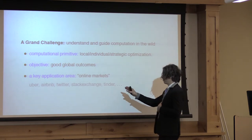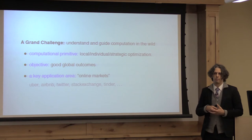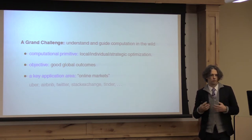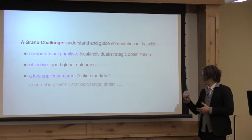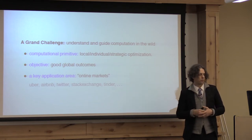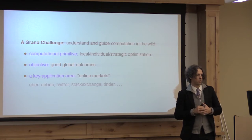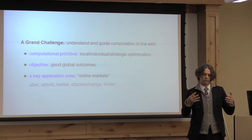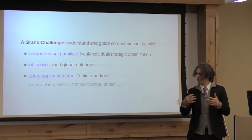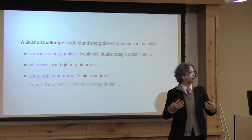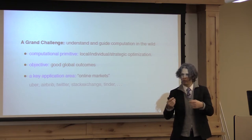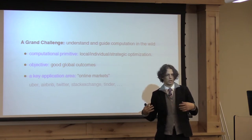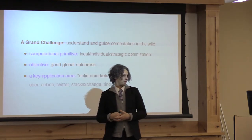What I care about is whether my system as a whole achieves good outcomes. When a bunch of individuals get together and interact under some rules, and they're optimizing for themselves, is the resulting outcome a good outcome? Can we change the rules a little to get better outcomes? A key application area from computer science is online markets — the Ubers, Airbnbs, Tinders. If it's an app on your phone, there's probably some kind of online market underneath it making it all work.